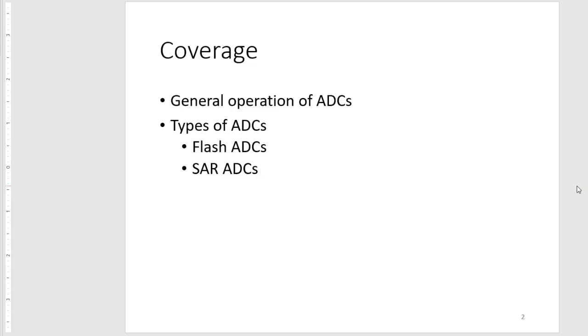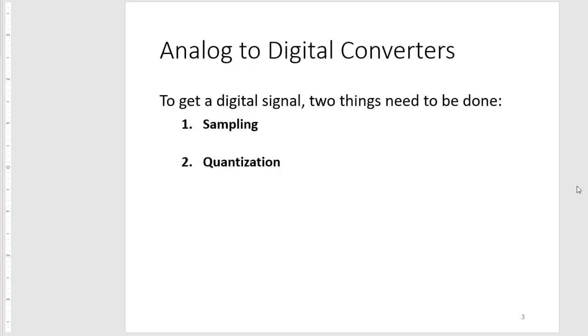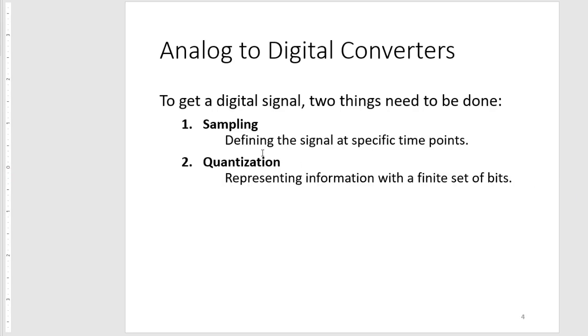To start, analog to digital converters need to do two things: sampling and quantization. Sampling simply means defining the signal at specific time points. Quantization means representing that sampled information within a finite set of bits.